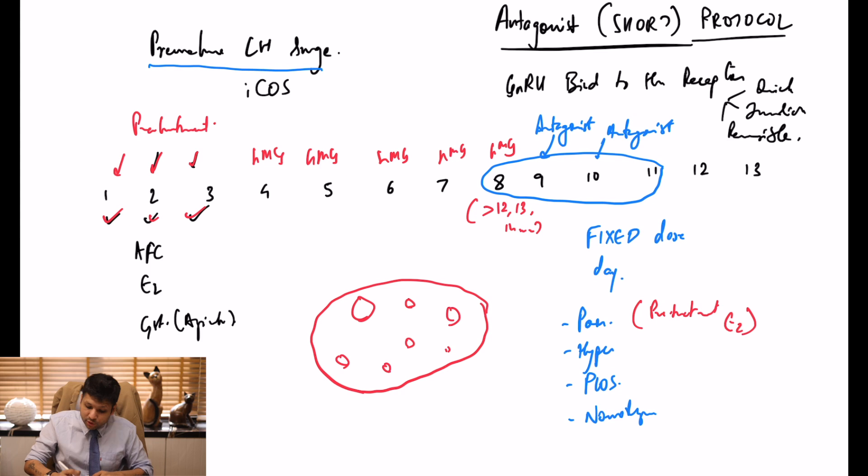The only thing you should not give to patients on antagonist is pre-treatment OCP. Do not give this when you want to do antagonist protocol because pre-treatment OCP will severely reduce LH levels. That's going to affect oocyte quality and reduce the number of top quality embryos.